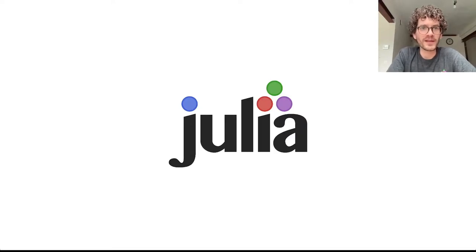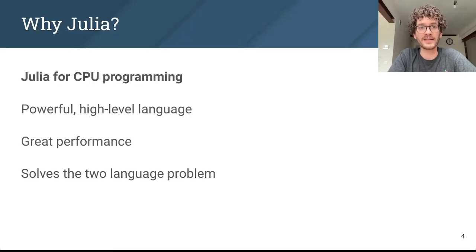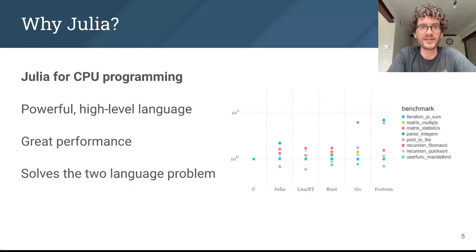So first of all, what makes Julia a good programming language for working with GPUs? If we look at why Julia is interesting for CPU programming, we have a couple of well-known advantages. It's a powerful high-level language with great performance, as you can see in these micro benchmarks comparing Julia to C. And as a result, the language solves the so-called two-language problem.